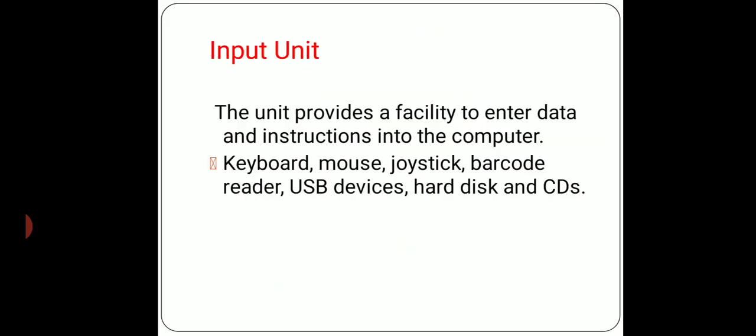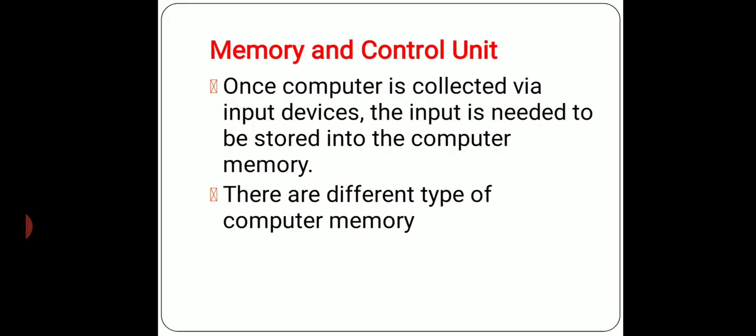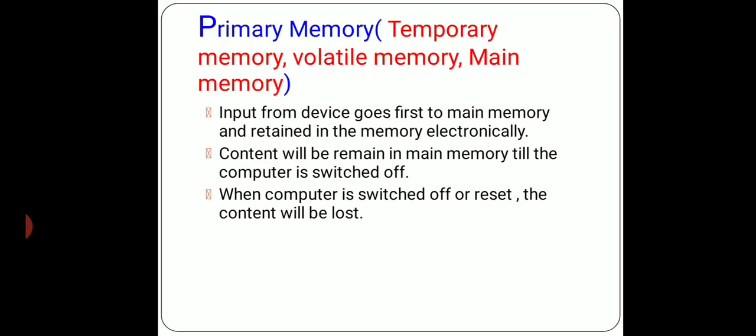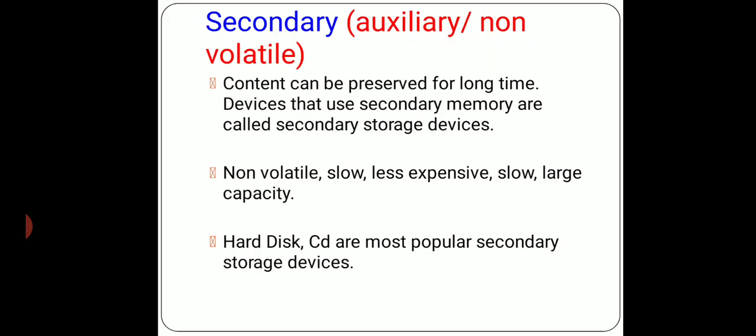Input unit: input unit is used for data entry. Input unit includes mouse, keyboard, joystick, and barcode reader. Memory and control unit: inside memory there are two types — primary memory, which is temporary, volatile, and also called main memory. When you switch off your phone or computer, we lose the data — that is temporary memory. Secondary is auxiliary memory or permanent memory. Hard disk and CD are the most popular secondary storage devices. Content can be preserved for a long time.